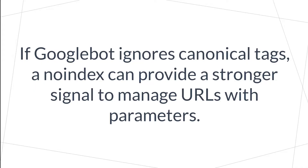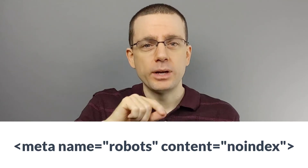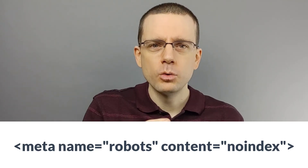However, there are certain instances where Google starts to ignore canonical tags. So in those cases, you need something a bit stronger than a canonical tag. That's where a noindex tag can be added to the page instead — so anytime the URL contains a particular parameter, you add a meta robots noindex tag. That meta robots noindex tag, when added to the page, tells Google that they should not index this particular URL on the website.